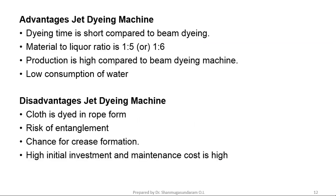Advantages of Jet Dyeing Machine: dyeing time is very short, material to liquor ratio is 1 to 5, production is very high compared to beam dyeing machine, and consumption of water is also very less. Disadvantage: cloth is dyed in rope form with risk of entanglement.